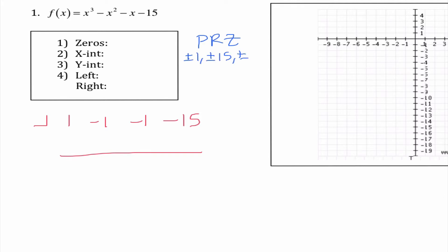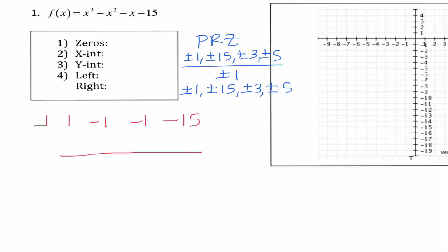The factors of 15 are 1, 15, 3, and 5 — all plus or minus — divided by the factors of 1. When we divide those out, my options are plus or minus 1, plus or minus 15, plus or minus 3, plus or minus 5. All together we have eight options, and I know a maximum of three of these is going to work because it's x cubed.